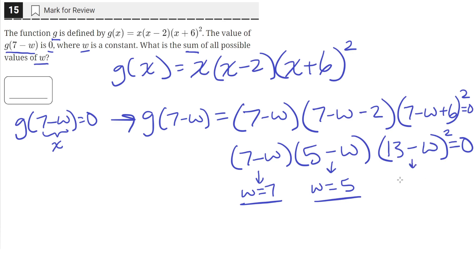And then for the last one, w equals 13. 13 minus 13 is 0, and 0 squared is still 0. So these are the three solutions for w.